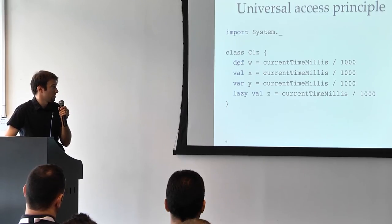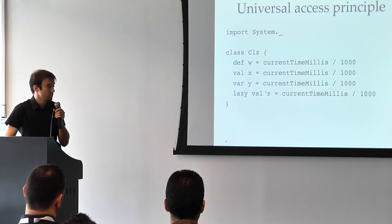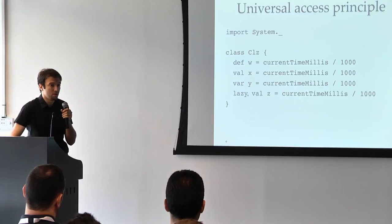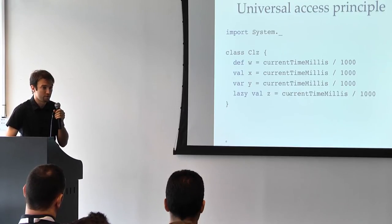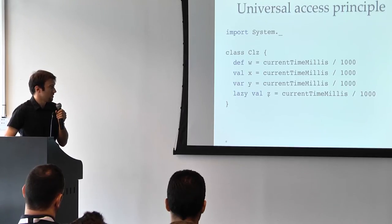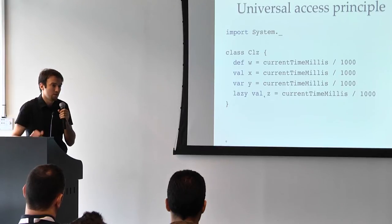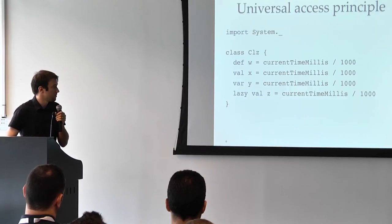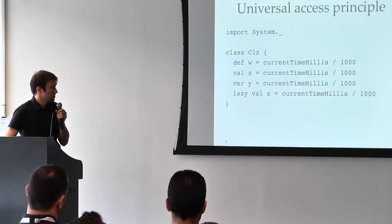Alternatively, if we want to cache the value, we can change the def to a lazy val. It will still be lazy, which means that it will be computed only on the first time that this member is accessed. But if it's accessed for the second time, it will not be computed again. So you can just use all of these interchangeably, and it will be transparent to the user.